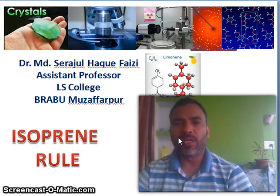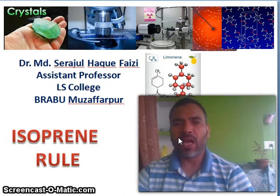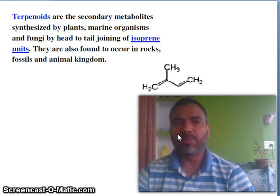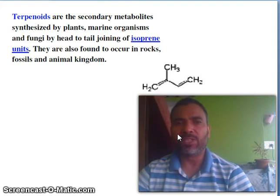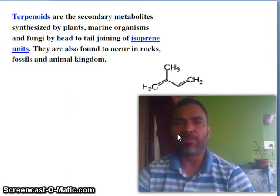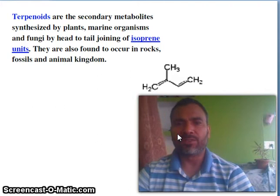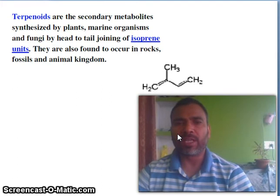Today in this video, I am going to explain about terpene, especially the isoprene rule. Terpenoids are the secondary metabolites synthesized by plants, marine organisms and fungi by head-to-tail joining of isoprene units. They are also found to occur in rocks, fossils and the animal kingdom.